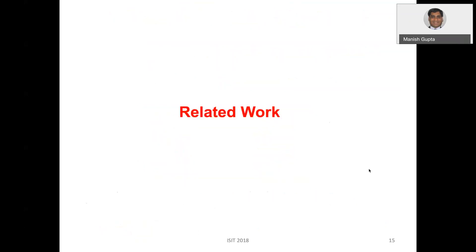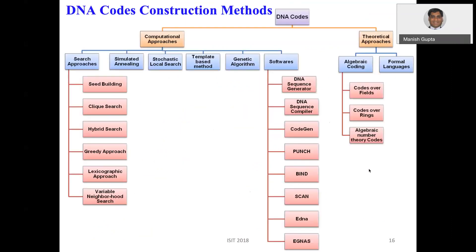Those are the basic definitions of DNA codes. Now, how do we construct them? Different techniques are available: computational approaches include search methods such as simulated annealing, stochastic local search, and genetic algorithms, and there are also software tools available. Algebraic approaches are based on either algebraic coding theory or formal languages. One can use codes over fields, codes over rings, and algebraic number theory codes. I am now going to talk about codes over rings.